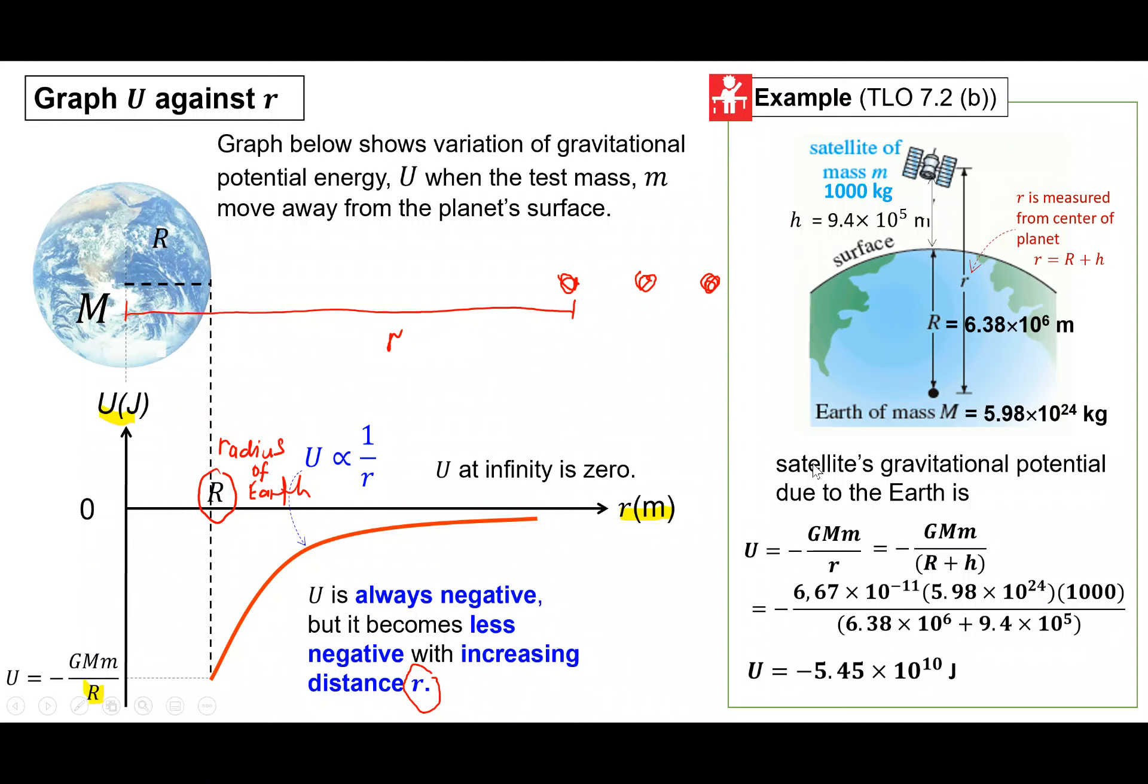Contoh kita ada example dekat sini. So dia kata, satellites gravitational potential energy due to the earth. So kita ada satelit yang kita letak 9.4 darab 10 kuasa 5 height daripada surface bumi. So ini dekat sini, ini kita panggil sebagai height ataupun altitude. Tapi bila you tengok balik equation gravitational potential energy, kita ada R kecil dekat sini. So R kecil dekat situ, you kena tambah, dan sebab R kecil tu adalah refer kepada distance, satellite daripada center of bumi. Jadi you have to sum up the radius of the earth plus dengan altitude ataupun height.